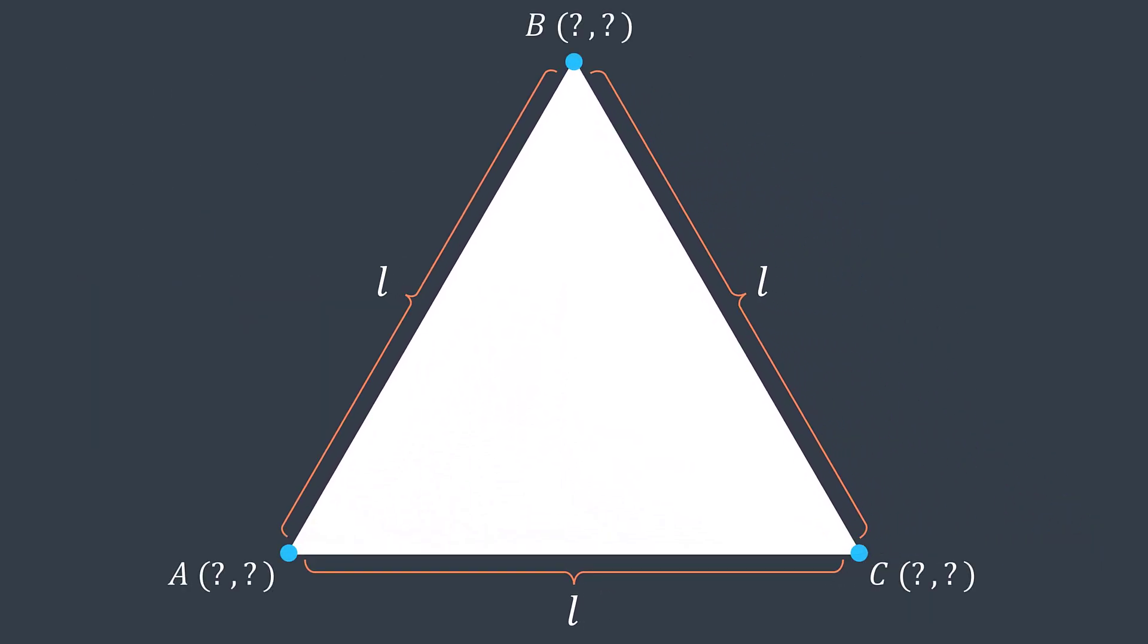And we cannot put them anywhere. We must put them in a way that the distance between A and B is L. Also between A and C and between B and C is the property of the equilateral triangle.